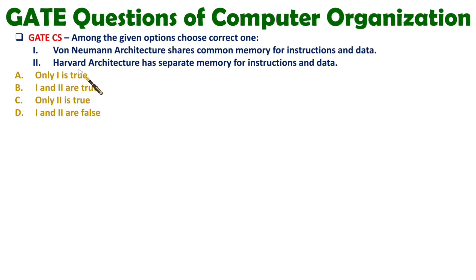Second statement is Harvard architecture has separate memory for instructions and data. Obviously this statement is also correct. Harvard architecture is having separate memory for instructions and data and Von Neumann architecture is having common memory for instructions and data. Based on that you can say option B is correct as both statements are correct.